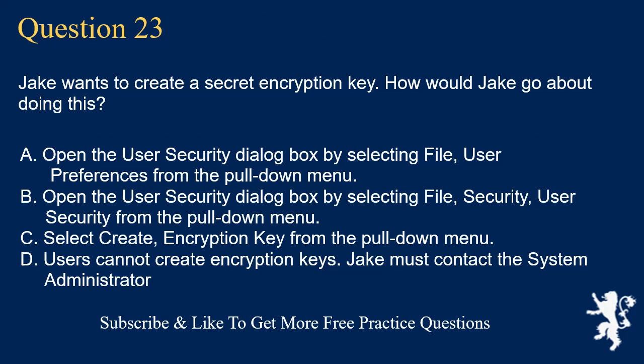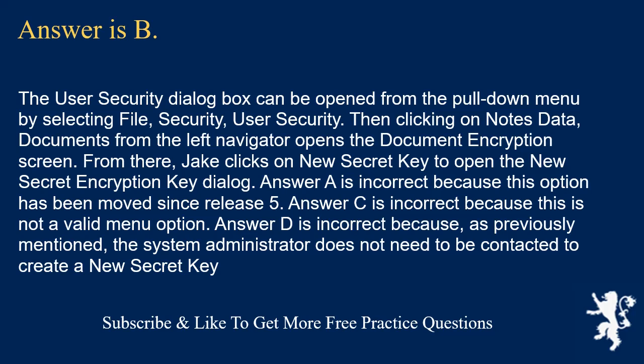Question 23. Jake wants to create a secret encryption key. How would Jake go about doing this? Open the user security dialog box by selecting File, User Preferences. Open the user security dialog box by selecting File, Security, User Security from the pull-down menu. Select Create, Encryption Key from the pull-down menu. Users cannot create encryption keys; Jake must contact the system administrator. Answer is B. The user security dialog box can be opened by selecting File, Security, User Security, then clicking on Notes Data, Documents to open the document encryption screen. From there, Jake clicks New Secret Key. Answer A is incorrect because this option was moved since Release 5. Answer C is incorrect because this is not a valid menu option. Answer D is incorrect because the system administrator does not need to be contacted to create a new secret key.